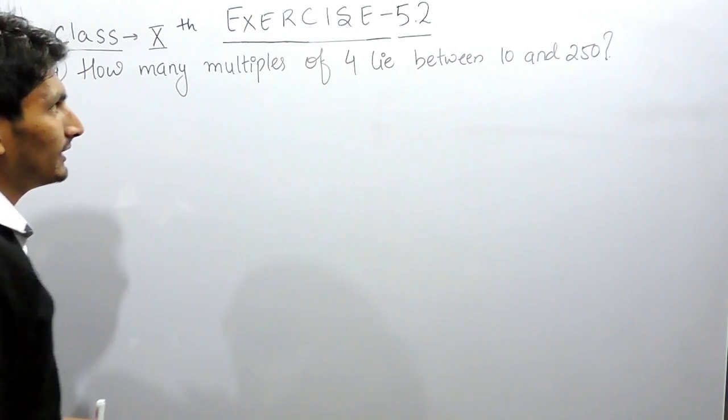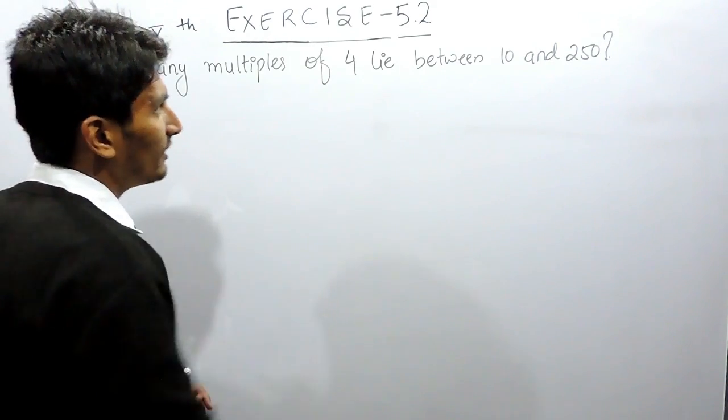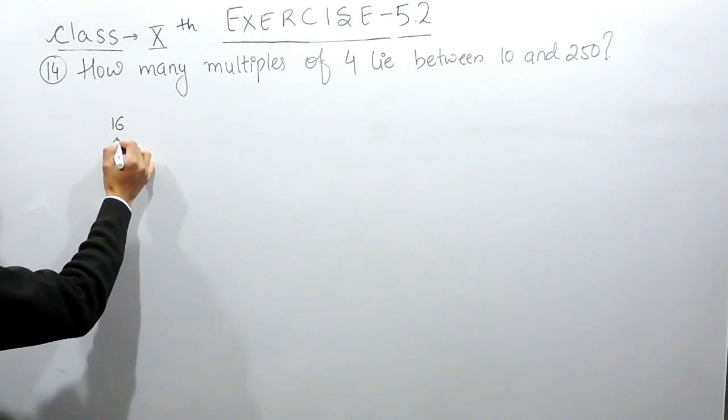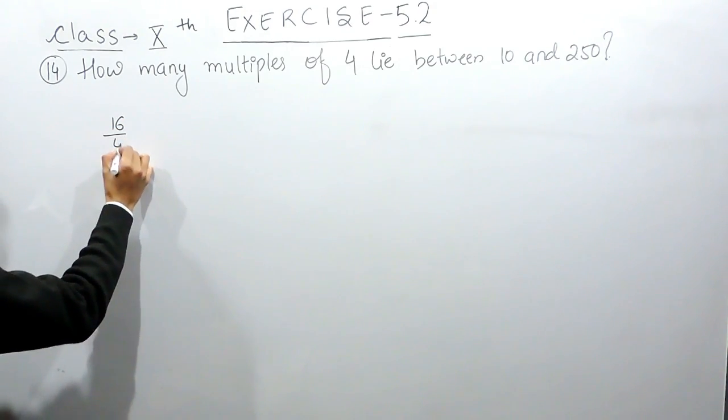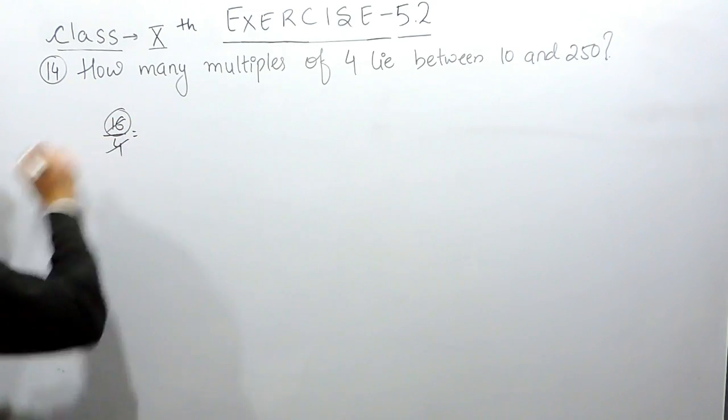What are the multiples? Multiples are basically the numbers which are divisible by 4. If I am saying that 16 is a multiple of 4, it means 16 must be divisible by 4. So this is the multiple of 4.